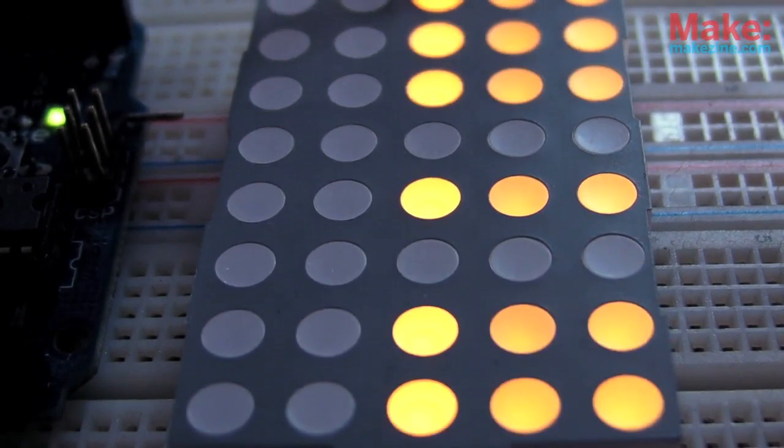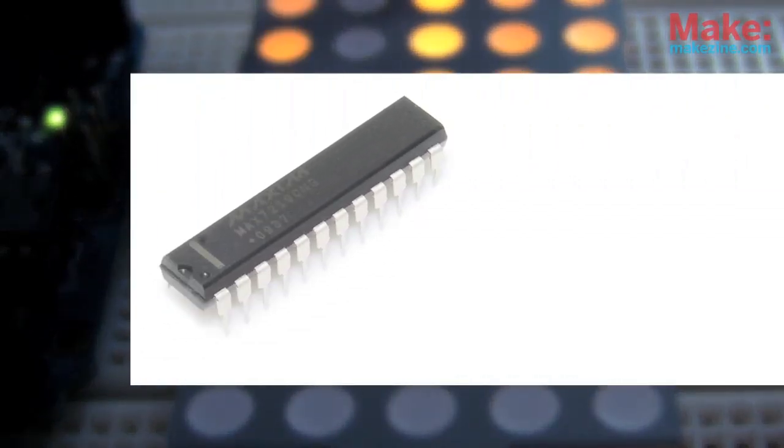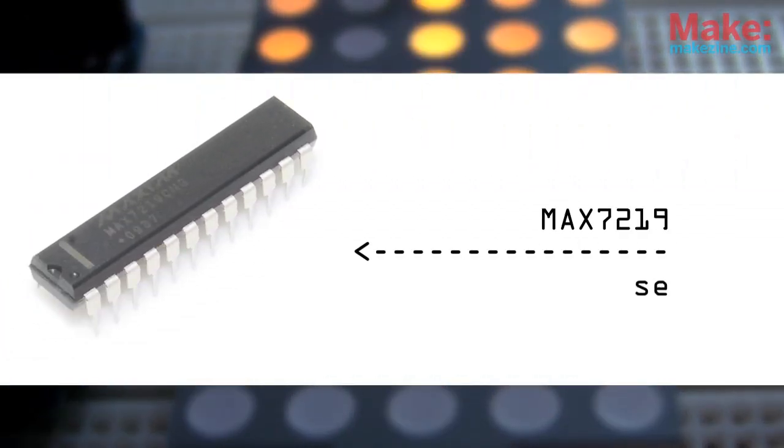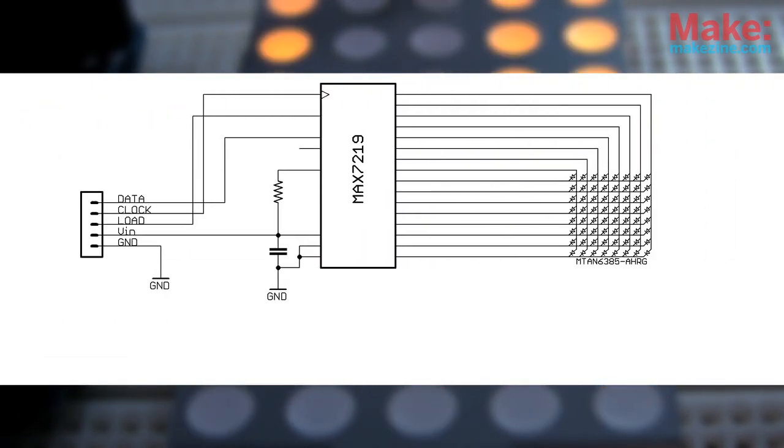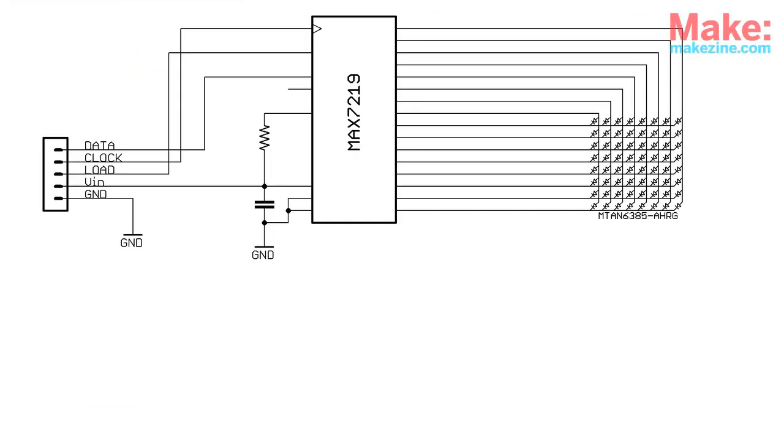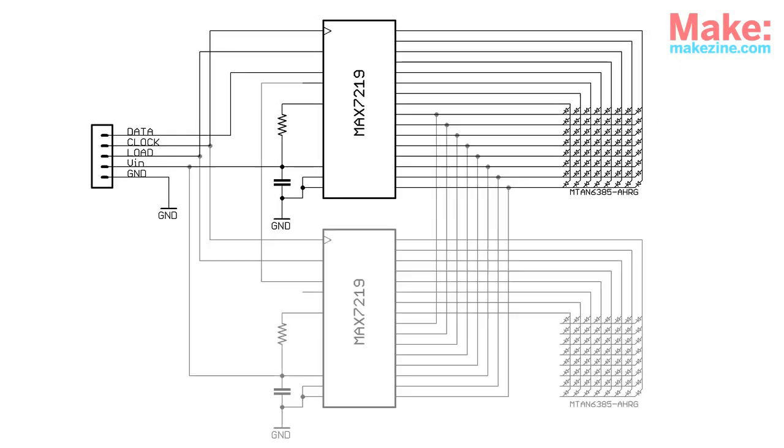One solution is to use a dedicated LED driver chip, like the MAX7219 IC. This chip will listen for data sent from the Arduino, and multiplex the matrix accordingly, at full brightness. I decided to use two of these to control a little bi-color red and green 8x8 matrix.